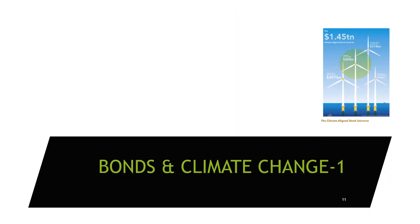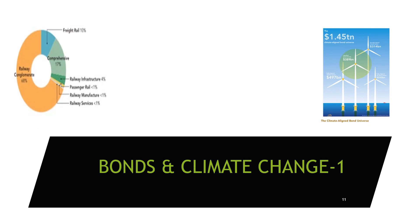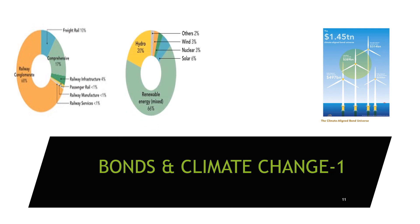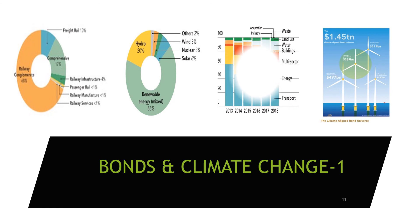For bonds and climate change, the biggest market is the fully aligned market, followed by strongly aligned and then standard green bonds. In the transport sector, railways are the biggest area of investment. In energy, the renewable energy mix has the biggest green bonds. Transport investment is gradually decreasing whereas energy is increasing year over year.